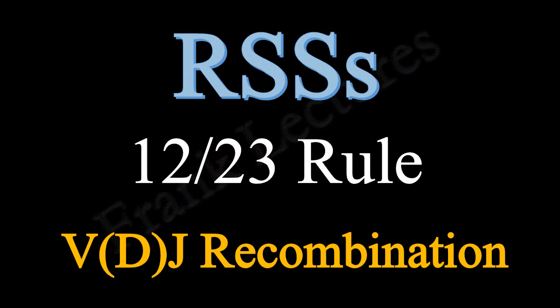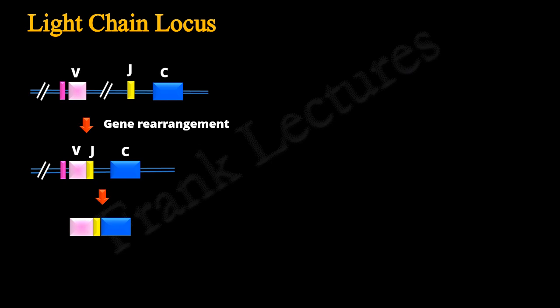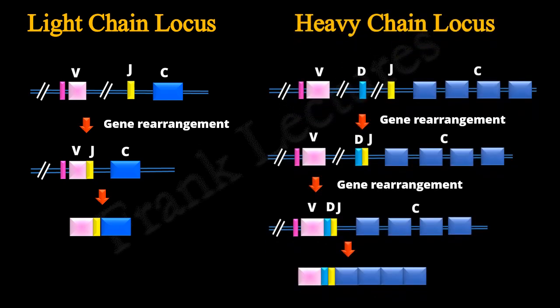In the previous video lectures, we studied the detailed steps involved in VDJ recombination at both light and heavy chain loci. In the case of the light chain locus, only one gene rearrangement event results in the formation of the variable region exon, formed by joining randomly selected V and J gene segments. In the case of the heavy chain locus, two gene rearrangement events result in the formation of the variable region exon, formed by joining of V, D, and J gene segments.